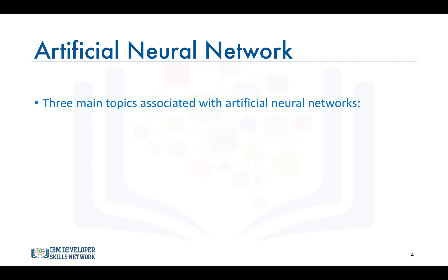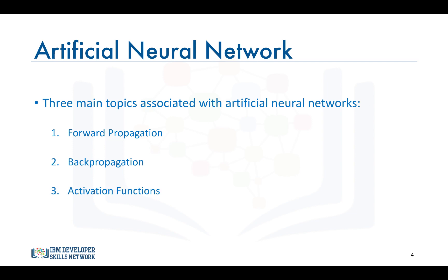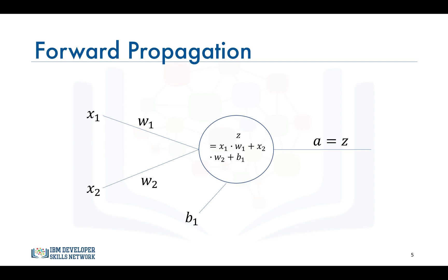When working with neural networks, the three main topics that we deal with are forward propagation, back propagation, and activation functions. The rest of this video will be mainly about forward propagation, explained through examples with numbers. Forward propagation is the process through which data passes through layers of neurons in a neural network from the input layer all the way to the output layer.